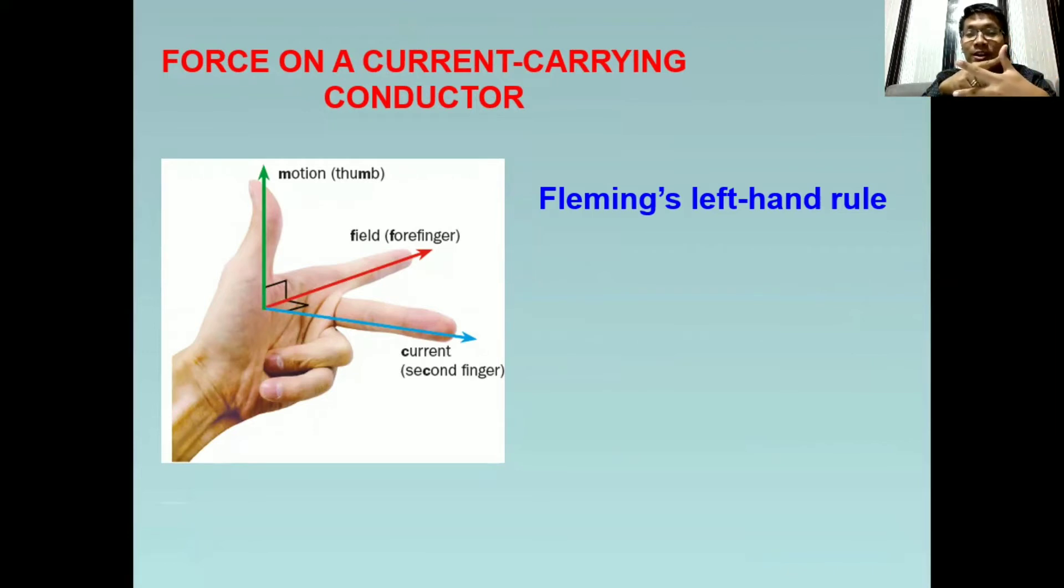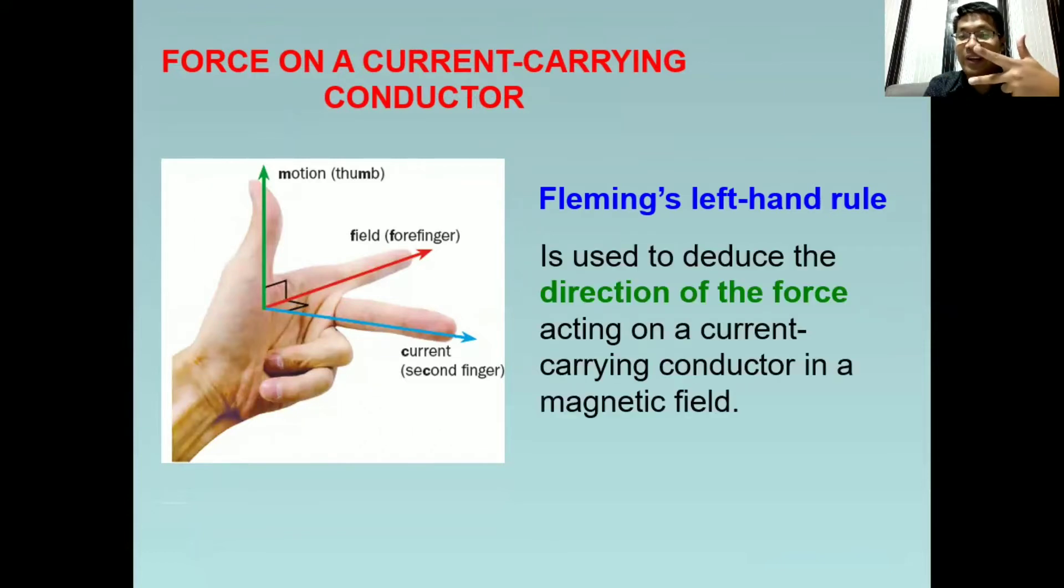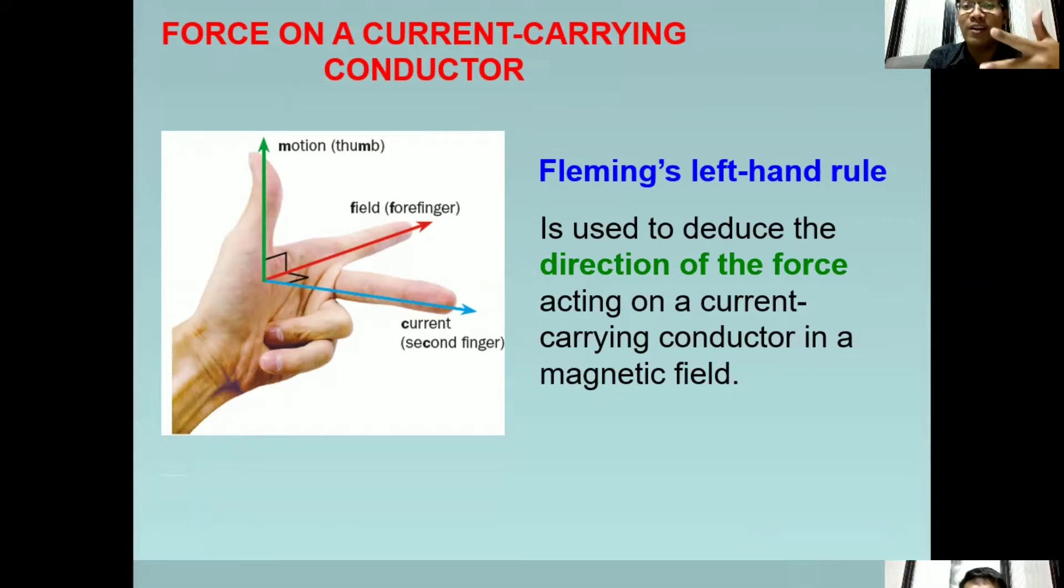Ulit. Thumb: force. Forefinger or pointing finger: magnetic field. Then the middle finger is for current. And with this, we can find out or determine the direction of the force.